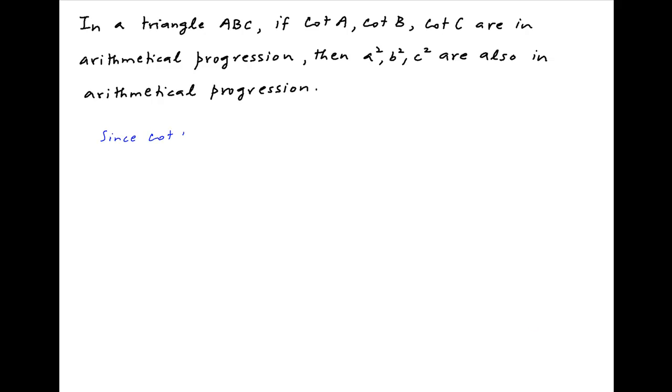We are given that cot A, cot B and cot C are in arithmetical progression. It therefore follows that 2 times cot B is equal to cot A plus cot C.